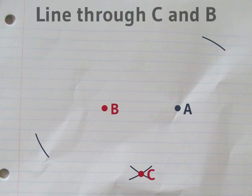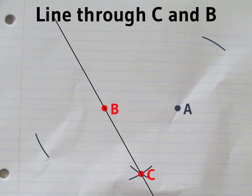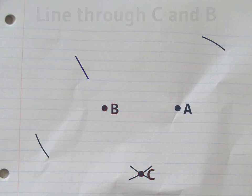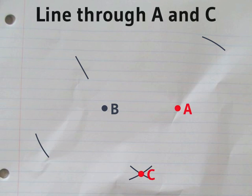Next we'll draw a straight line through B and C. Then another straight line, this time through A and C.